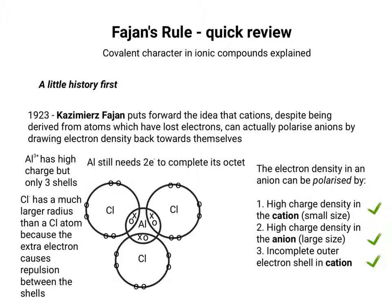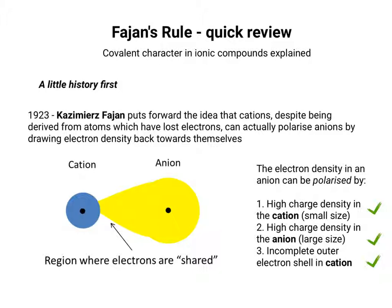So covalent bonds are the order of the day. What happens when you get small cations and large anions is there's a region where the electrons start to become more covalently bonded rather than forming an ionic bond. If the three criteria of Fajans' rules are met to some extent, you'll get more covalent character, even though you've got oppositely charged ions attracting each other.